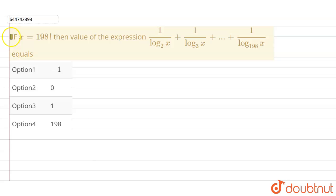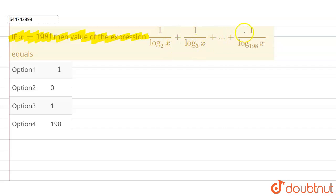Our question is: if x equals 198 factorial, then the value of the given expression is — 1 upon log x to the base 2 plus 1 upon log x to the base 3 plus dash dash dash plus 1 upon log x to the base 198.